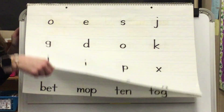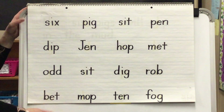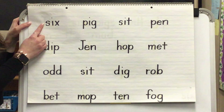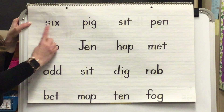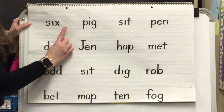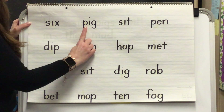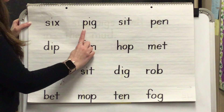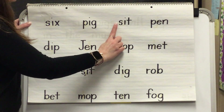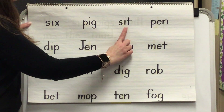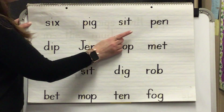Now we're going to blend sounds to read words. Blend. Word. Yes, six. Blend. Word. Yes, pig. Blend. Word. Yes, sit.